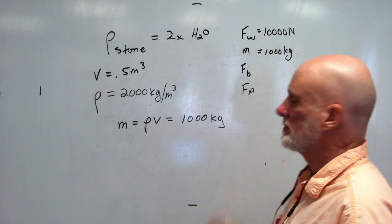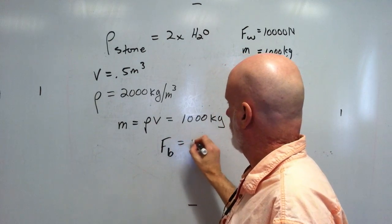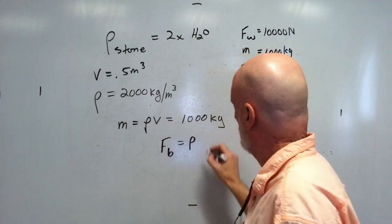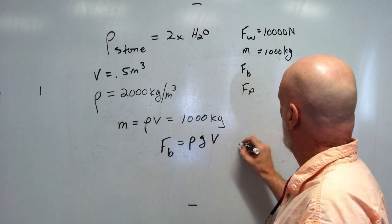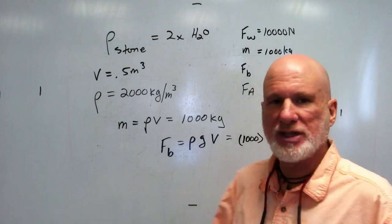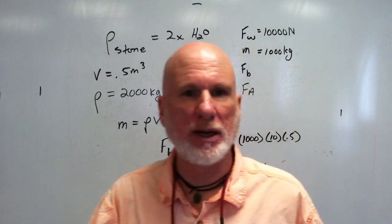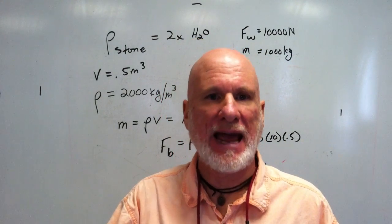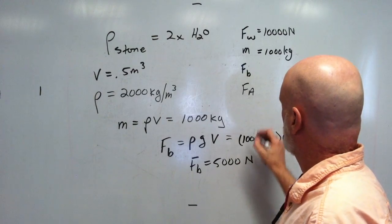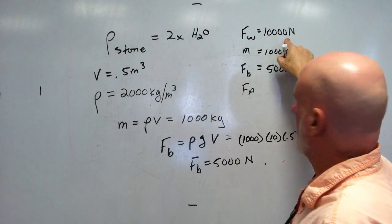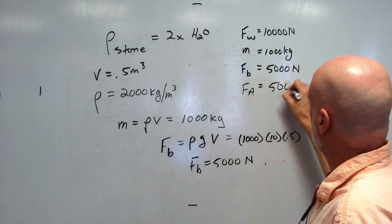The weight is ten thousand newtons. The buoyant force equals density of fluid times ten times volume: one thousand times ten times zero point five. A thousand times ten is ten thousand, and half of that is five thousand, so the buoyant force is five thousand newtons. With a weight of ten thousand and buoyant force of five thousand, the apparent weight is five thousand newtons.